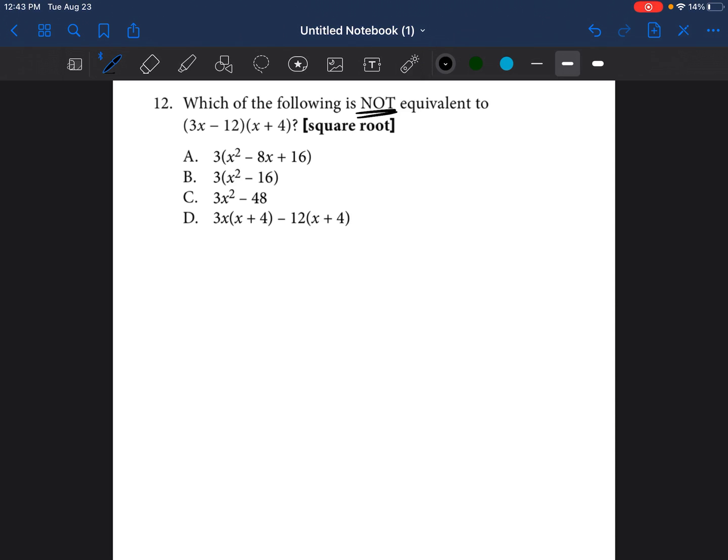The way that I would solve this is that I would just distribute 3x minus 12 times x plus 4. If it's easy for you to distribute, go ahead and distribute these two together and then figure out which of the four is not equivalent. If it's not very easy for you to distribute, I want to just break it down a little bit further for you so that you can feel confident the next time you see a problem like this. So we're just going to take everything in this first parenthesis and multiply it by everything in the second parenthesis. But we're going to take it one term at a time.